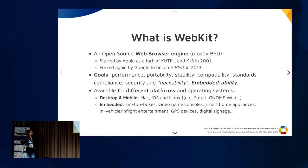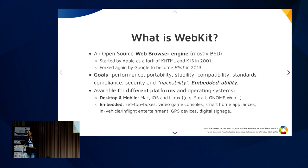WebKit is available on many different platforms and operating systems. These days you can use it on desktop and mobile like Mac, iOS, and Linux, but you can also use it on embedded. The flexibility it provides with a stable API and ABI is crucial. So you can find it on your PlayStation, on your set-top box, or maybe you have a cooking machine that also uses WebKit.